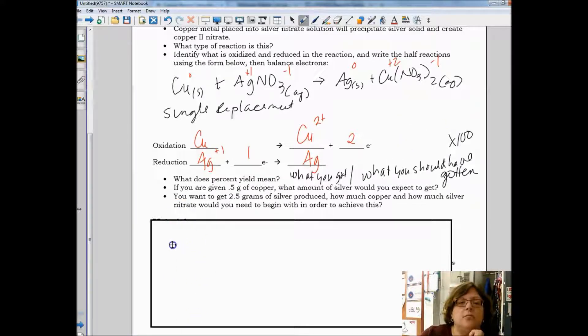If you are given 0.5 grams of copper, what amount of silver would you expect to get? Well, we look up at our equation, copper to silver. If we balance this guy, we need two nitrates, so we would make two silvers. So, 0.5 grams of copper, first we have to change it to moles, 63.55 grams in one mole.